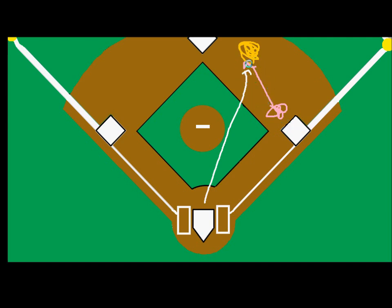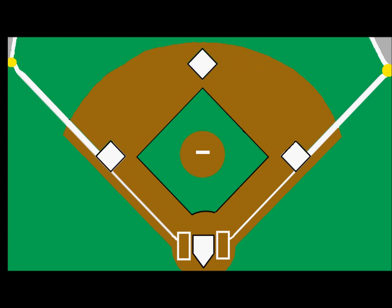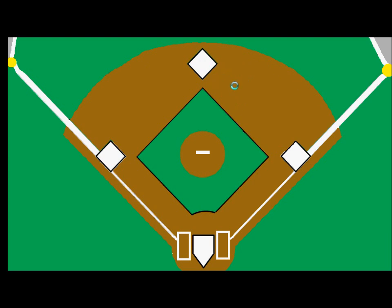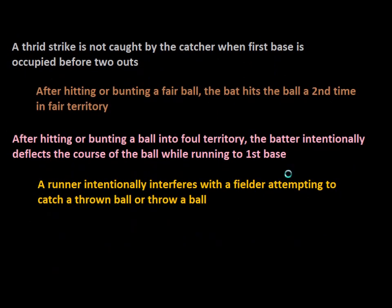If the runner doesn't allow that, if he runs into the fielder intentionally, or if the ball hits the runner, then the runner is automatically out. Another time you might see this is if a double play is being attempted — say the shortstop receives the ball flipped from the second baseman, and the runner on first, who is out due to the force play, makes some movement where he doesn't get out of the way and intentionally interferes with the player trying to complete the play.